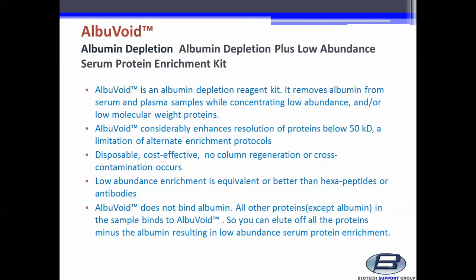It removes albumin from serum and plasma samples while concentrating low abundance and/or low molecular weight proteins. Albuvoid considerably enhances resolution of proteins below 50 kD, a limitation of alternate enrichment protocols.